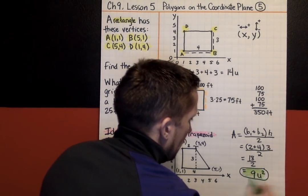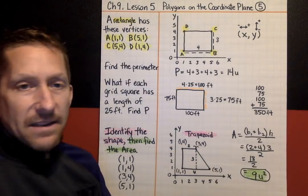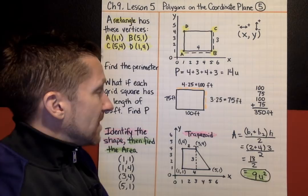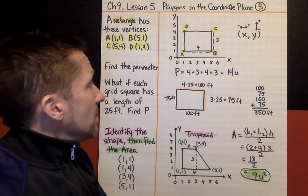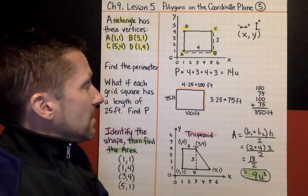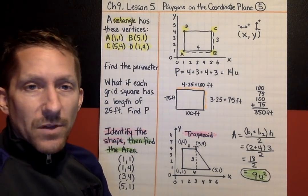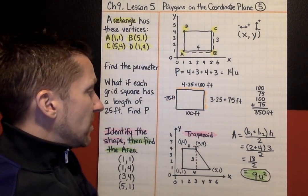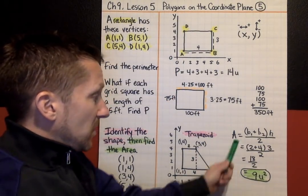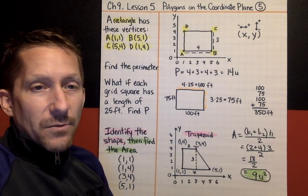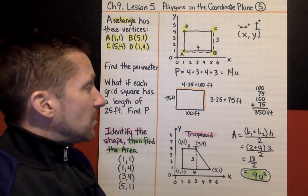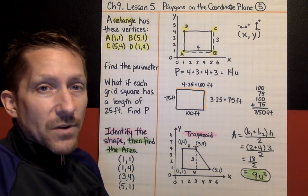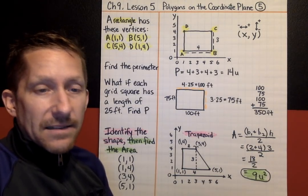So that does it for lesson five. You're working with a coordinate plane, doing what it says, graphing the shape or the points that it says to see what shape it makes, finding what it says whether it's perimeter, whether it's area, using formulas. So a lot of repeat stuff that you've used from previous lessons. I'll see you soon for the last lesson in Chapter 9, Lesson 6.